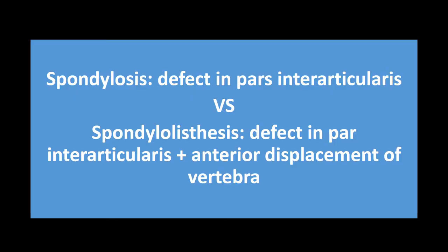An important distinction: spondylolysis is a defect in the pars interarticularis — essentially a stress fracture due to microtrauma. Spondylolisthesis is the same defect but with anterior displacement of the vertebra. Spinal stenosis is abnormal narrowing of the spinal canal leading to pressure on the cord, causing pain, numbness, or weakness in the arms or legs. L5 is the most commonly involved. Treatment is NSAIDs, physical therapy, steroid injections, and then surgery if needed.